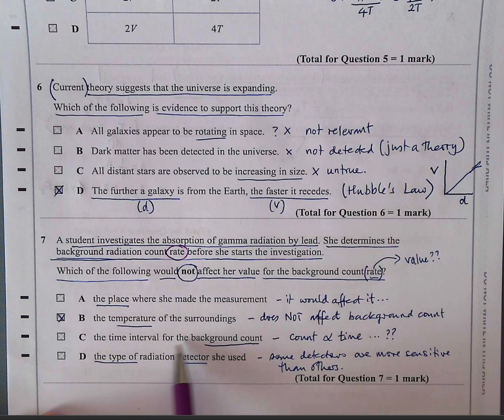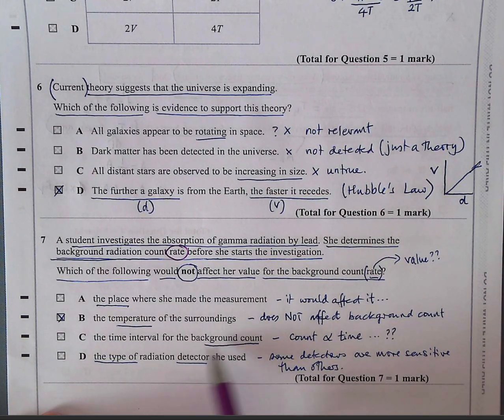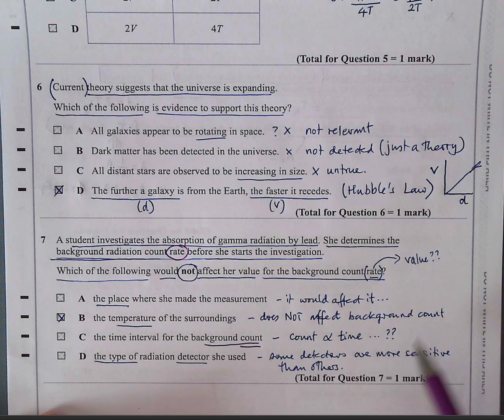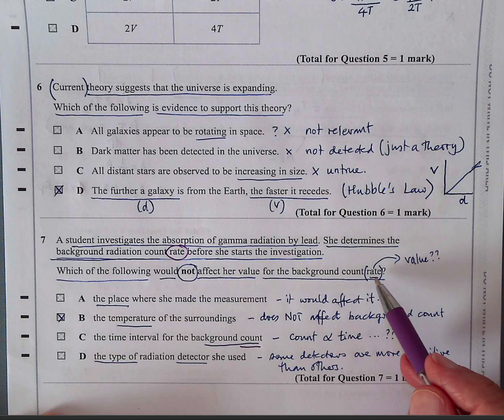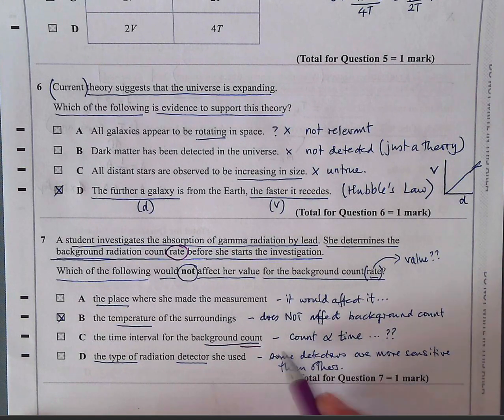So the place does affect the background count rate. The temperature of the surrounding does not affect the background count rate. So it's independent of temperature. So B is the correct answer. Let's just go through them. The time interval for the background count. Well, if you increase the time interval, the background count will increase. So this is not true. However, here they're talking about count rate. So if you do it for a greater time interval, you might get a more accurate count rate. But over here, they haven't put count rate. They put count. So I think there's some confusion with this question. They're using count rate here and background count there. Obviously, if you increase the time, the background count will change. So this part, I think question C is confusing. But anyway, B is definitely the answer.